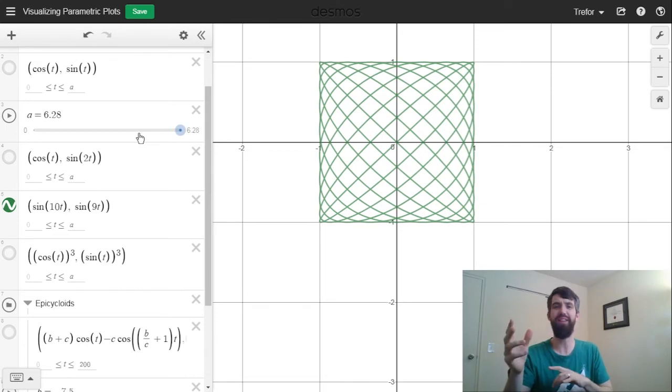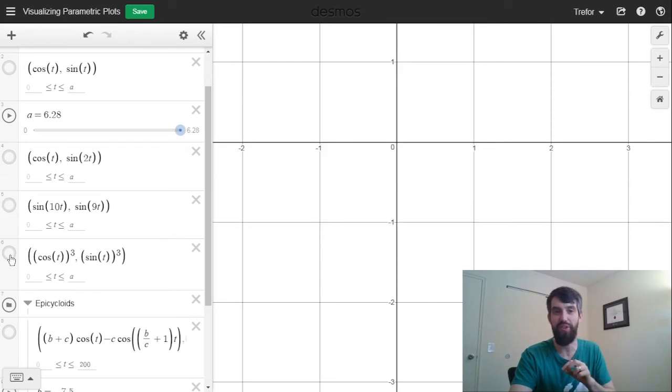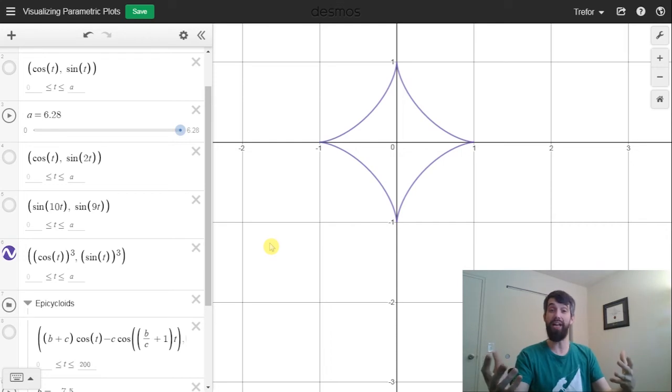So, you can try putting in different numbers, I put in a 10 and a 9 for my coefficients here, you can try different things and see what they get. The next one I'm going to do is this one that's cos cubed and sine cubed, so let me turn it off and I'll turn this one on. And this is kind of cool because this one has corner points, it's got these little cusps.